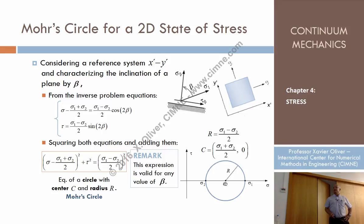So that is a circle centered into the midpoint of sigma 1, sigma 2, and passing through sigma 1, sigma 2. So the locus of all possible points that I could obtain by changing beta from 0 to 360 degrees is that circle, and that is called the Mohr circle.